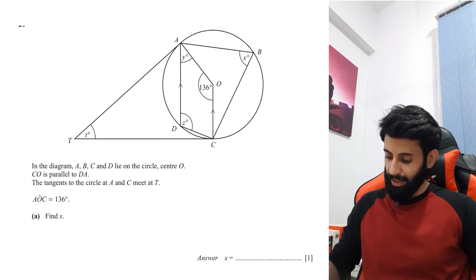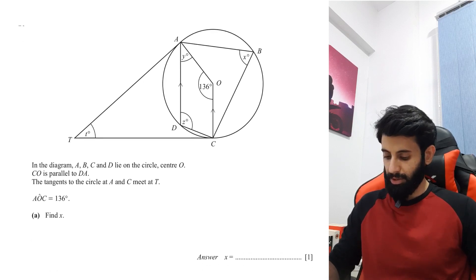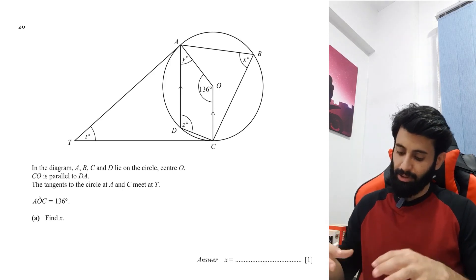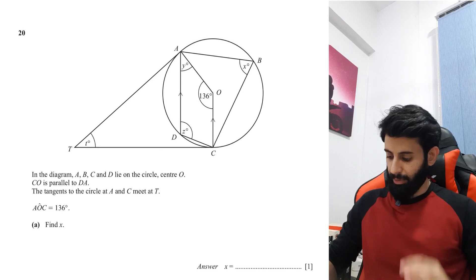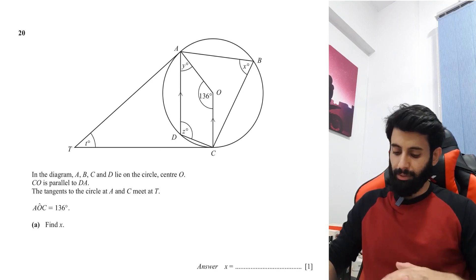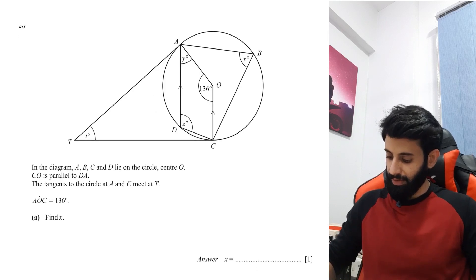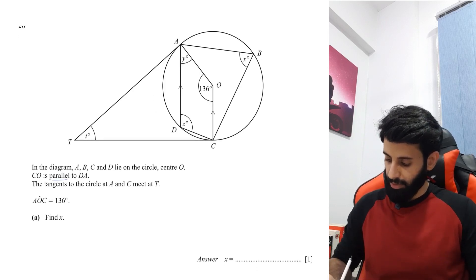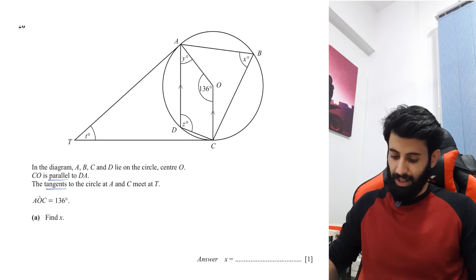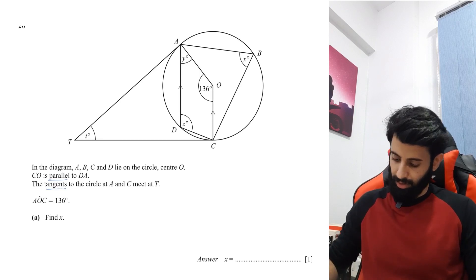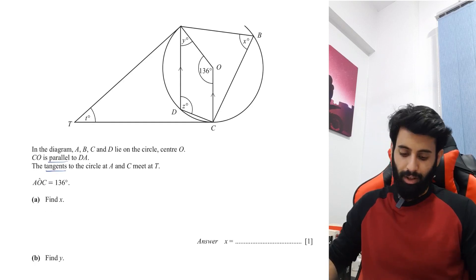In the diagram, A, B, C and D lie on a circle with center O. CO is parallel to DA. Make sure that as you're reading the question you also have an eye on the diagram. The tangents to the circle at A and C meet at T. Angle AOC is given as 136 degrees and you have to find X.